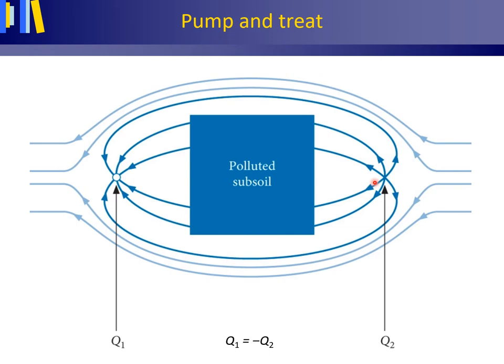When the injection rate Q2 of well 2 is taken equal to the pumping rate Q1 of well 1 (Q1 = −Q2), and with the right setup concerning the distance between the wells and the actual pumping rate Q1, the polluted area is captured in a symmetrical water lens isolated from the regional groundwater flow system. Because of continued pumping and recharge, the subsoil will get cleaner and cleaner with the passing of time. This hydrological isolation is an example of a technique more generally called pump and treat.